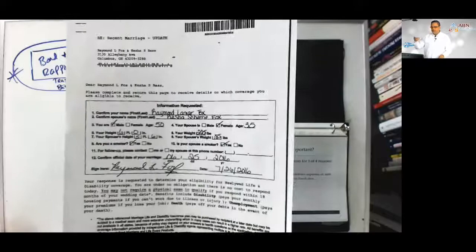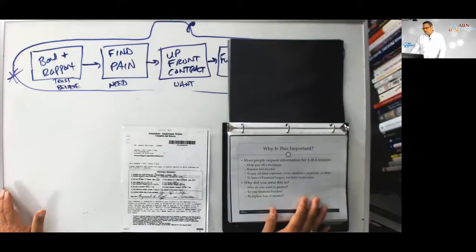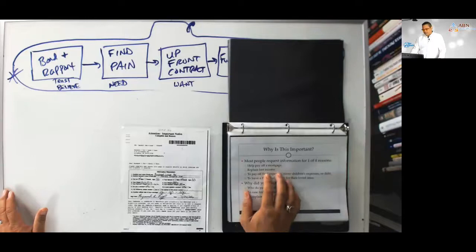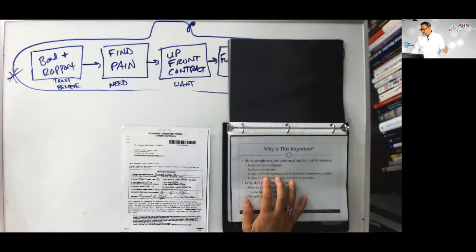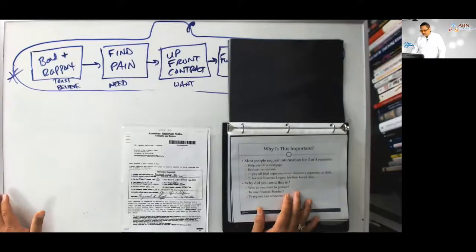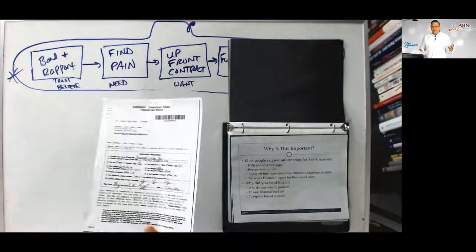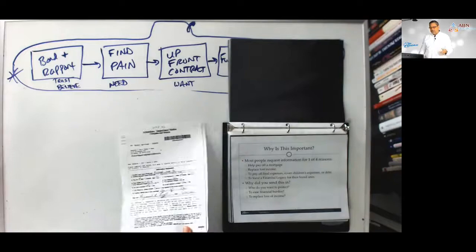So general insurance lead, let's just pull out the new marriage, okay? So the new marriage lead, remember what that looked like? So Joe and Mary, let's find out why this is important. Most people request information from us for one of four reasons, either to pay off the entire mortgage, maybe replace lost income on the death of a spouse, pay off final expenses, can maybe cover children's expenses or debt, leave a financial legacy to their loved ones. So tell me, when you fill this out, who filled it out, was it you, Mary, or you, Joe? Oh, you, Mary? Okay. Well, when you're filling this out, tell me what was on your mind. What were you thinking about? Boom. That's where you start the paying funding process on this slide.